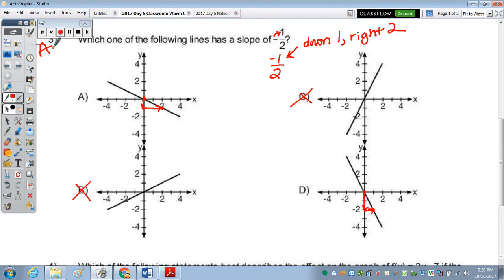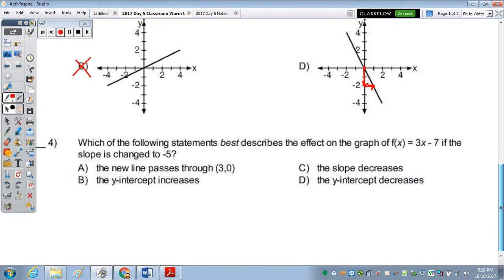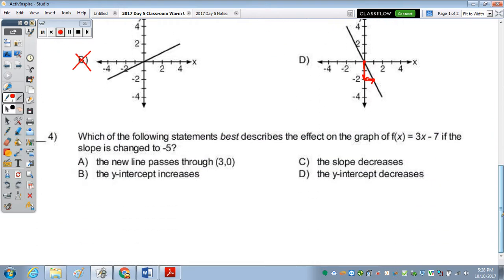Which of the following statements best describes the effect on the graph of, now this f of x, and I didn't catch that. We'll get to that notation with functions. It should be y equals, if the slope is changed to negative 5. So we go from y equals 3x minus 7 to y equals negative 5x minus 7.